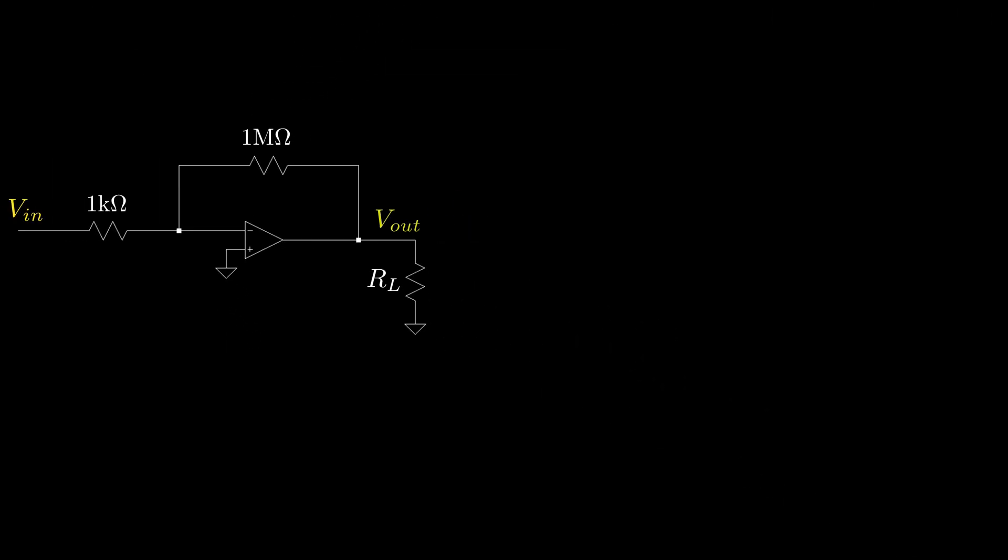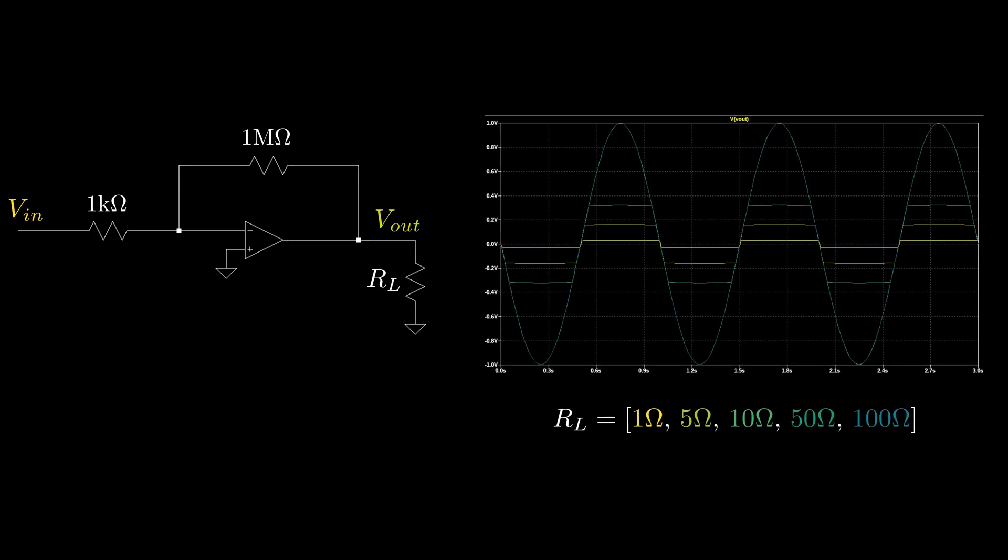However, with a real op-amp, if the load resistance is too small, the op-amp can't handle the current needed to drive the load. We can see this on the plot shown, where the input is the same 1 millivolt sine wave as before. The output waveform for load resistances of 1, 5, and 10 ohm show that the op-amp is unable to properly amplify the input signal beyond a certain range. Once the load resistance is high enough, the op-amp can once again work as an amplifier.